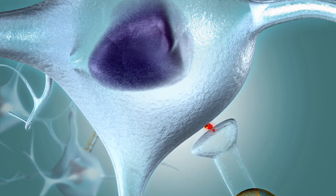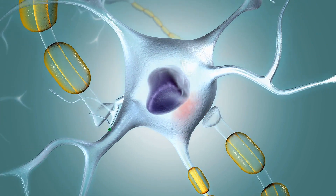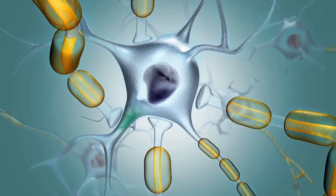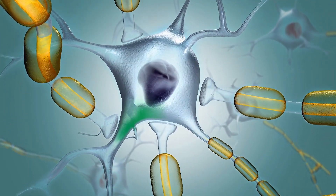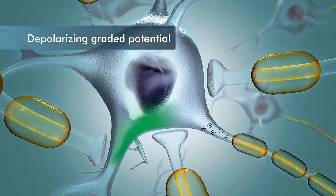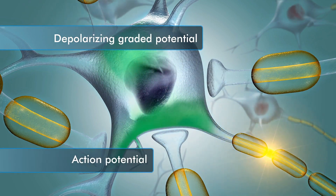If chemically-gated potassium channels in the input zone are stimulated to open, it allows potassium ions to diffuse out of the cell and causes the inside of the membrane to become more negative, moving the voltage in the trigger zone away from the threshold. These inhibiting graded potentials are known as hyperpolarizing graded potentials. Since depolarizing graded potentials cannot individually reach threshold, an insufficient quantity does not cause a response at the trigger zone. If there are enough of them to reach threshold, an action potential is generated.